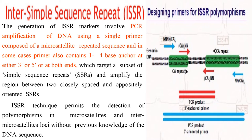Inter Simple Sequence Repeat, also called ISSR — the generation of an ISSR marker involves PCR amplification of DNA using a single primer composed of a microsatellite repeat sequence. In some cases, the primer also contains one to four base pair anchors at either the three prime or five prime end, or at both ends.